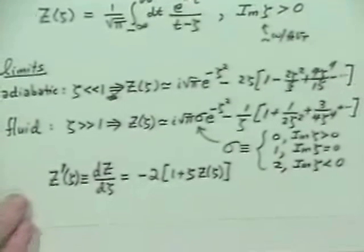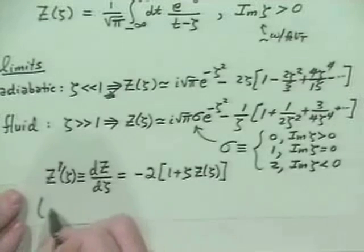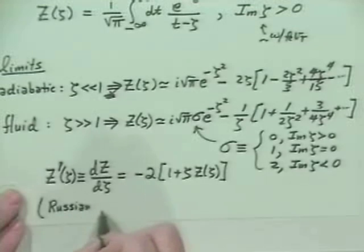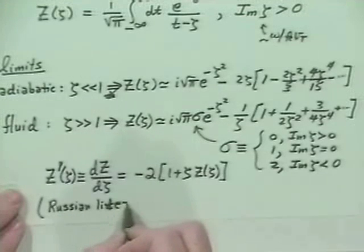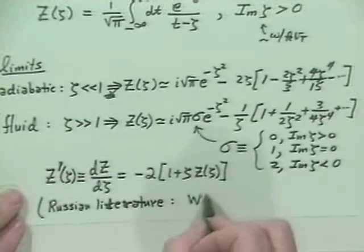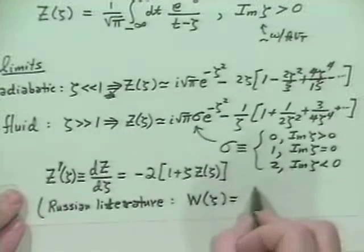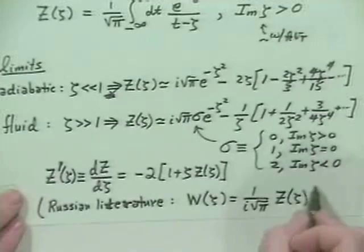Also nice to know: Z prime of zeta, defined as dZ/d-zeta, the derivative of the plasma dispersion function with respect to its argument, is just minus 2 times (1 plus zeta times Z of zeta). In the Russian literature they sometimes define this a little differently — they have a function capital W of zeta which is 1 over (i root pi) times this plasma dispersion function Z of zeta.